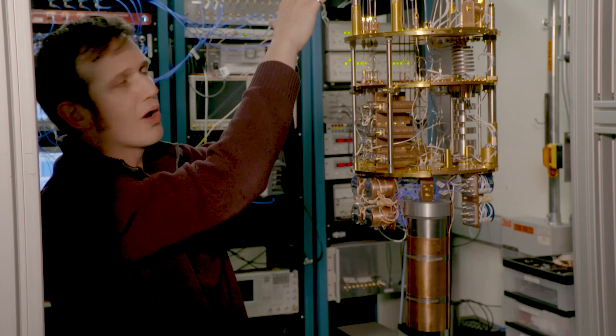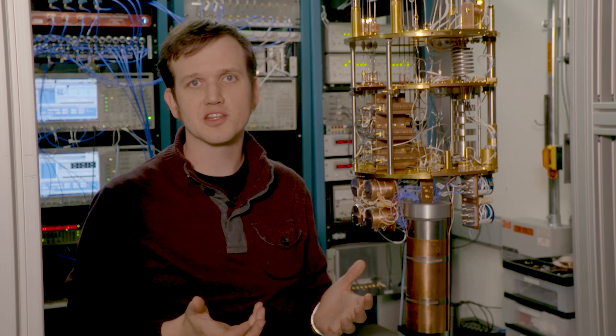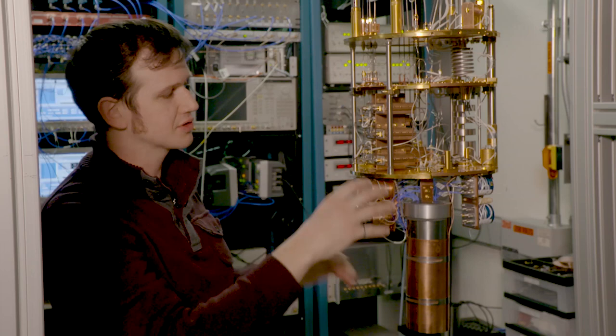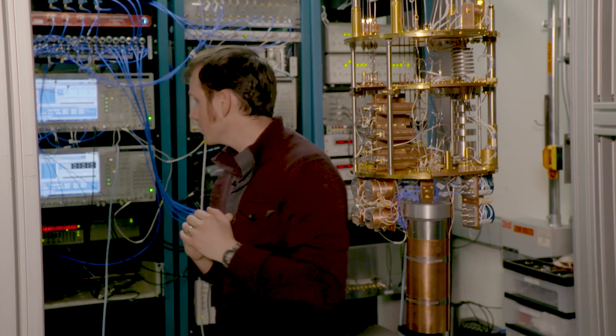The control pulses travel down these cables to the experiment where they control the state of the qubit. And after that we send down a series of measurement pulses also along these cables which interact with the qubit and then travel back up along these cables. And then back to this computer where they're converted into the results that we see online.